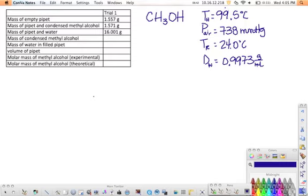Keep in mind that the volume of the pipette is equal to the volume of the water that is in the pipette. Use the relationship of mass and density to determine this volume. Once the volume of the pipette has been determined, equation three in the background section can be used to calculate the molar mass of the methyl alcohol.